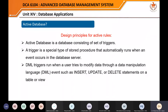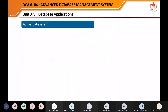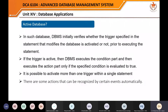DML triggers run when a user tries to modify data through data manipulation — INSERT, UPDATE, DELETE statements on a table or a view. In such databases, the DBMS initially verifies whether the trigger specified in the statement is activated prior to executing the statement. If the trigger is active, DBMS executes the conditional part, since each trigger has an if-then-else part. It then executes the action only if the specified condition is true. It is possible to activate more than one trigger with a single statement.